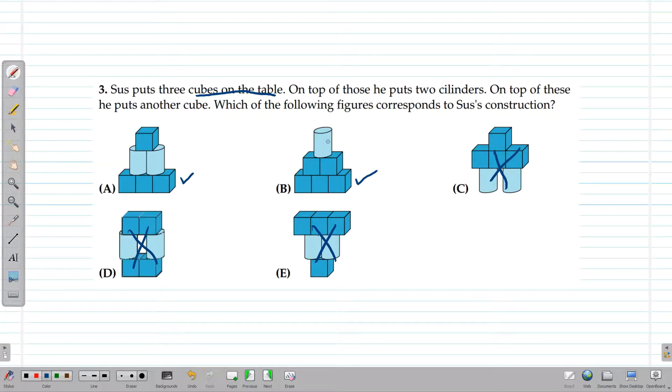The second thing is that he puts 2 cylinders. In figure A, we can see that there are 2 cylinders on top of the cubes, so this could be an answer. In figure B, there aren't 2 cylinders on top of the 3 cubes, so this could not be an answer.